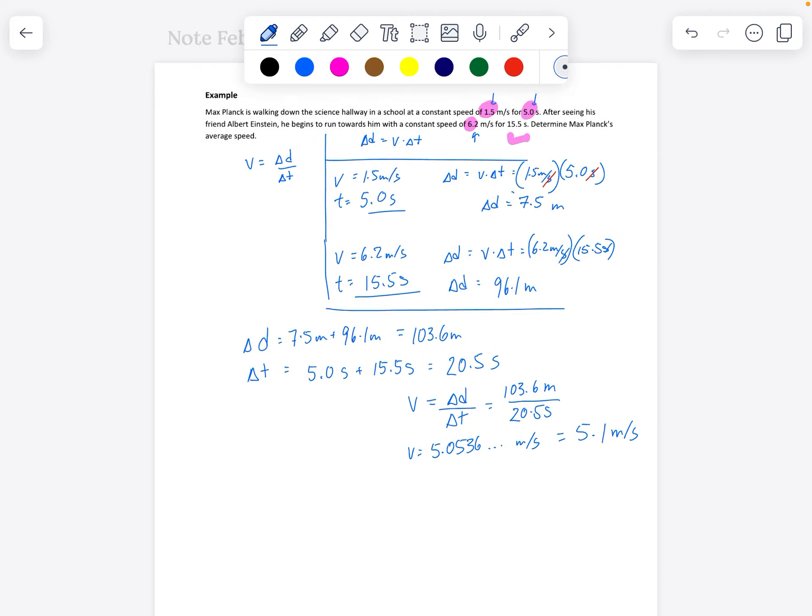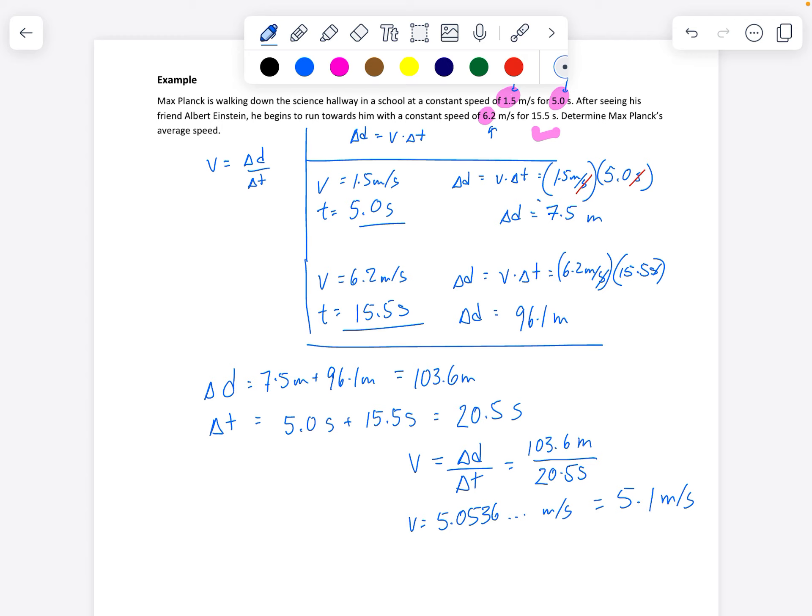So an average speed question, if you can find the total distance and the total time, then you can get the average speed for that interval.